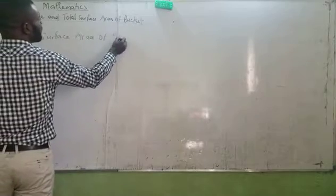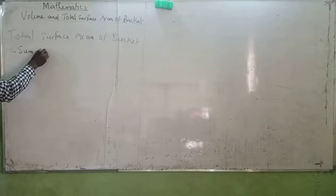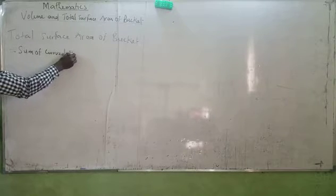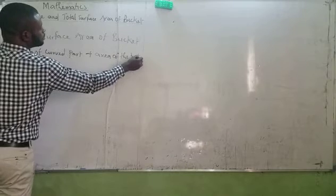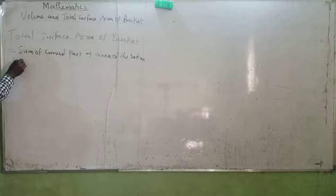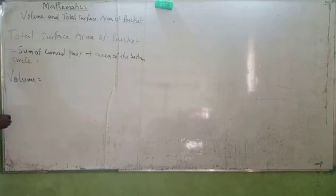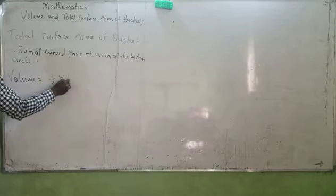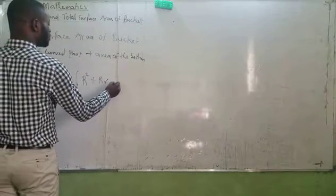Note that total surface area of a bucket will be equal to sum of curved parts plus area of the bottom. The bottom circle, that is what we are talking about. And the volume will be equal to one third of pi h bracket of big R squared plus big R small r plus small r squared.